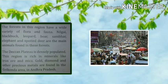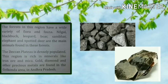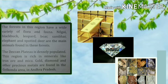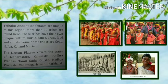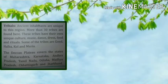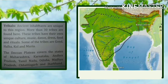The Deccan Plateau is densely populated and rich in minerals like iron ore and mica. Gold, diamonds, and other precious metals are found in the Golconda area in Andhra Pradesh. Ancient inhabitants are unique to this region — more than 30 tribes are found here. These tribes have their own unique culture, dance, music, food, and rituals. Some of the tribes are Gond, Halwa, Kola, and Muriya.